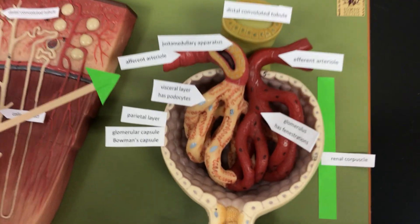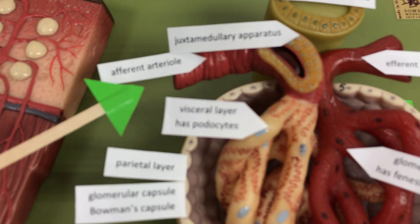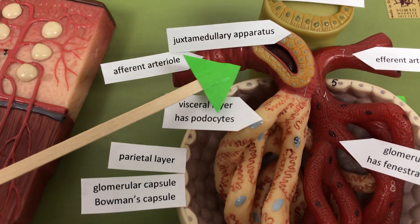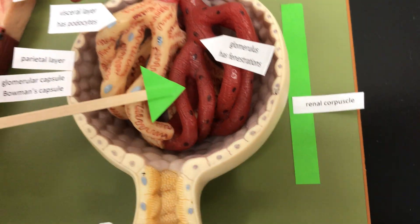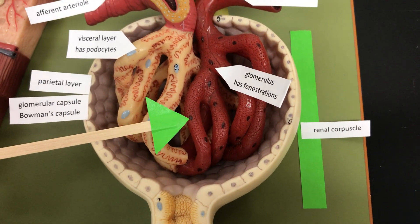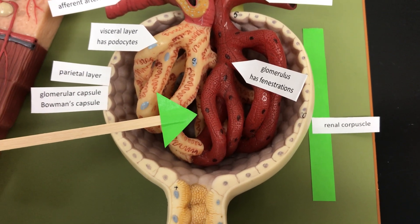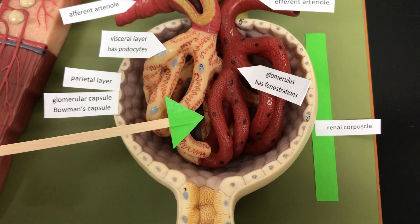So blood is brought to the renal corpuscle through the afferent arterial. It's going to flow through what is called the glomerulus. This is a ball of leaky capillaries. The blood pressure is going to push out everything except your formed elements and your large molecules.